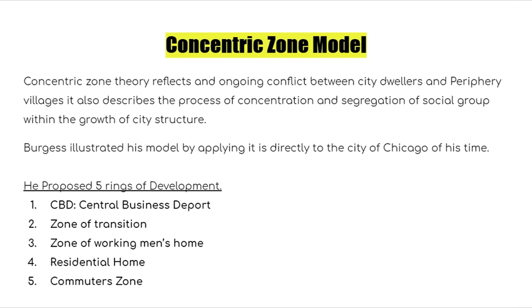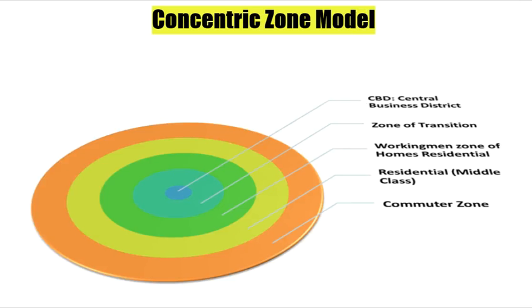Concentric zone theory reflects an ongoing conflict between city dwellers and periphery villagers, and describes the process of concentration and segregation of social groups within city growth. Burgess proposed five rings of development: first, the CBD or central business district; second, the zone of transition; third, the zone of working men's homes; fourth, the residential zone; and fifth, the commuter zone. In the model, the CBD is at the center, with each subsequent zone surrounding it outward.